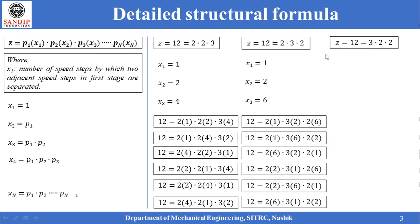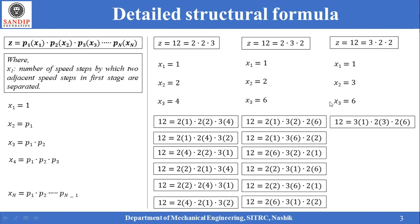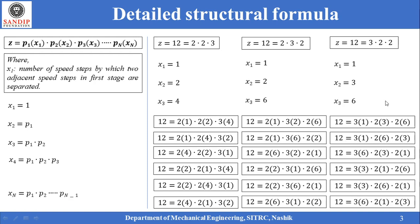We can write one more structural formula for a 12-speed gearbox: 12 = 3 × 2 × 2. For this structural formula, x1 = 1, x2 = p1 = 3, and x3 = p1 × p2 = 3 × 2 = 6. Thus the detailed structural formula becomes 12 = 3(1) × 2(3) × 2(6). Again, by changing the positions of x1, x2, and x3 — that is, 1, 3, and 6 — a total of 6 combinations of this structural formula can be obtained.